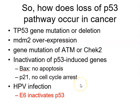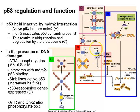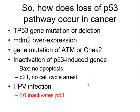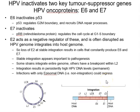P53 loss leads to cancer through P53 gene mutation or deletion, MDM2 overexpression, or mutation of the phosphorylating enzymes ATM, ATR, and CHK2 that stabilise P53 — inactivating those prevents P53 phosphorylation. Complete loss of P53 protein results in loss of BAX expression — no apoptosis — and P21 — no cell cycle arrest. This is also why HPV inactivates P53: it drives cells through the cell cycle and prevents cell death. HPV inactivates both PRB via E7 and P53 via E6, and this disruption is often caused by accidental viral integration into the host genome.